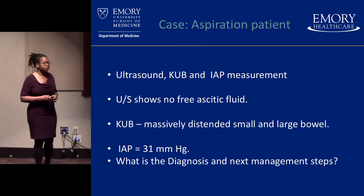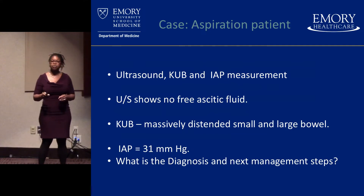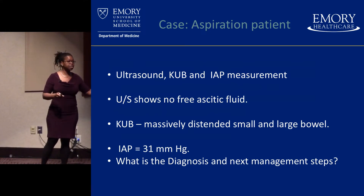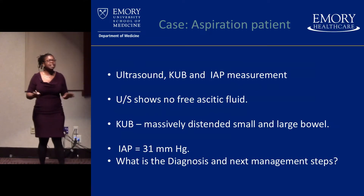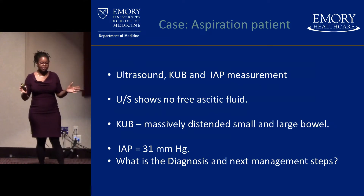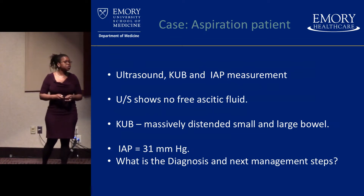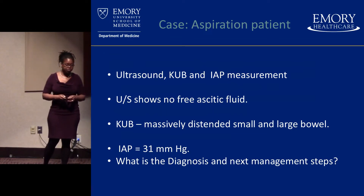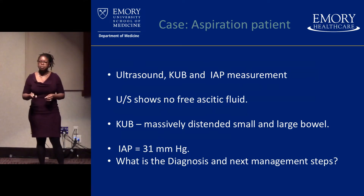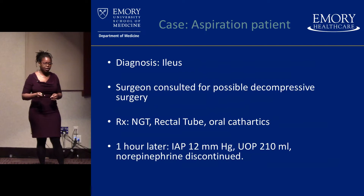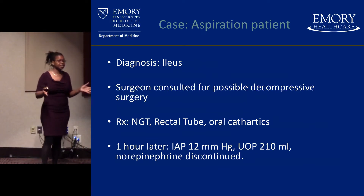The ultrasound shows no free ascitic fluid — unlike the first case, there isn't any to go after. The KUB is massively distended, large and small bowel. Intra-abdominal pressures are 31. What is the diagnosis and what are your next steps in management? It's an ileus — large and small bowel dilatation, no evidence of obstruction.